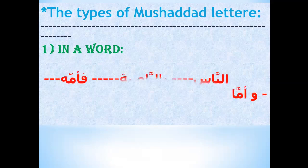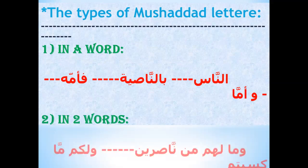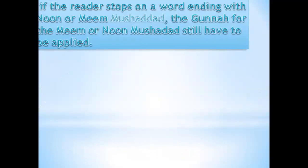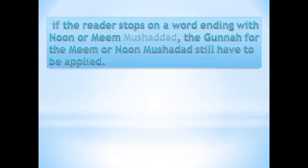In a word, for example — if the reader stops on a word ending with Noon Mushadad or Mim Mushadad, the Ghunna for the Mim or Noon Mushadad must still be applied. Don't say anna, but say anna with the nasal sound. Okay? Don't omit the nasal sound.